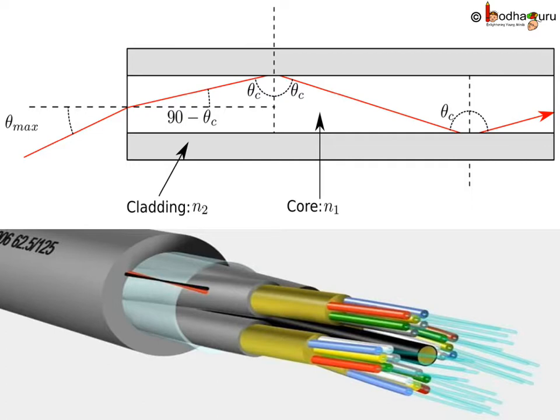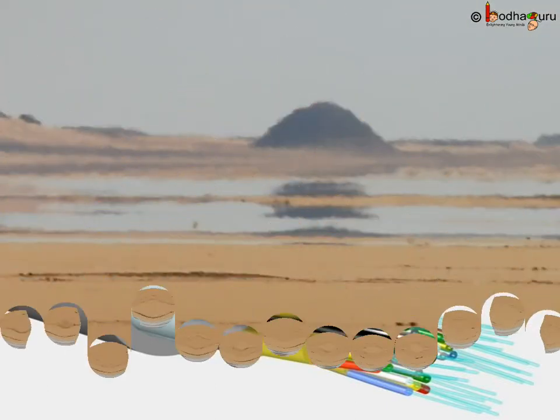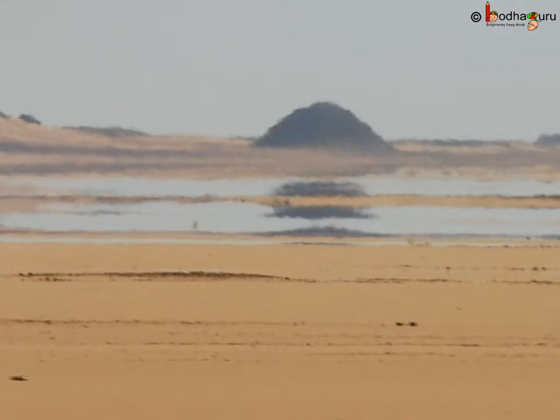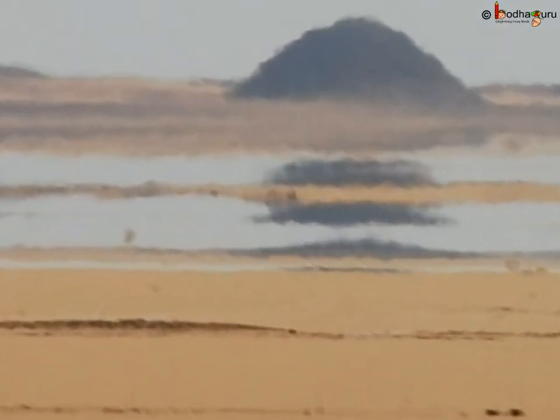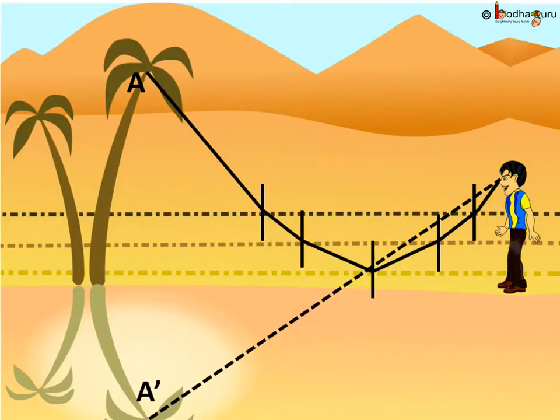Another example is mirage, an optical illusion of presence of water. Travelers in desert often get tricked by it. During hot days, air just above the hot ground becomes very hot and hence its density decreases, and the air above is still colder, more dense.